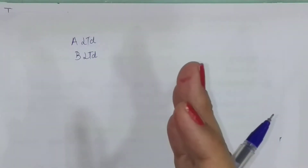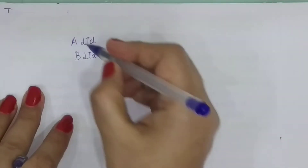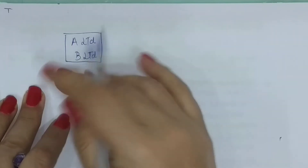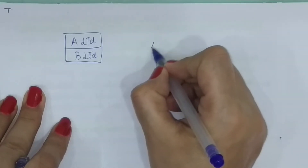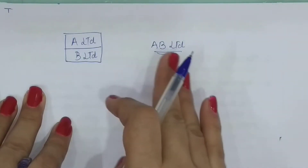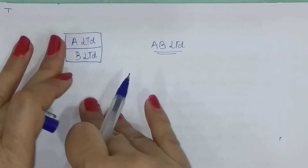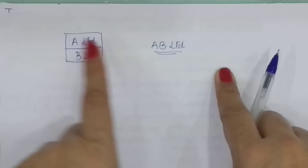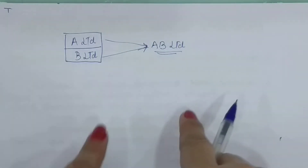There are certain ways to do this. One way is that both companies go into liquidation — that is, the identity of both companies is discontinued — and a new company, AB Limited, is formed to take over the business. So neither A company nor B company will continue; both go into liquidation and a new company is formed to take over the combined business.